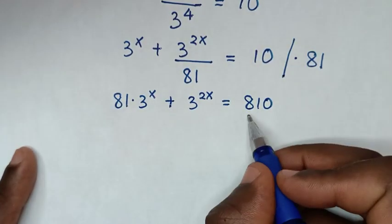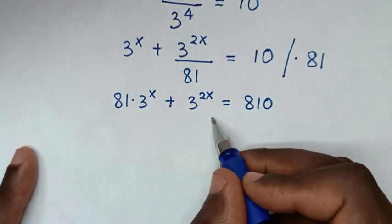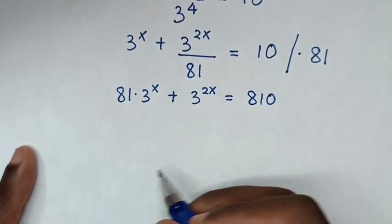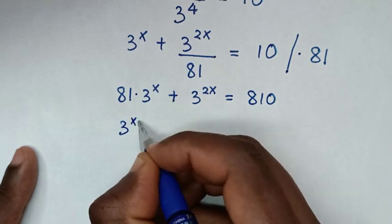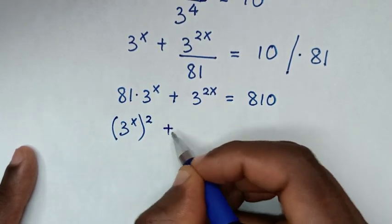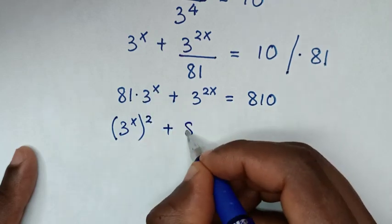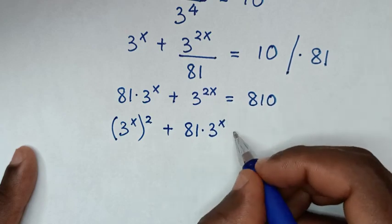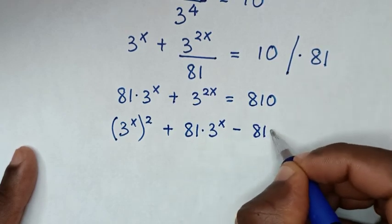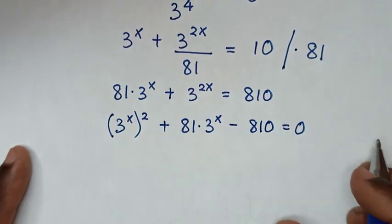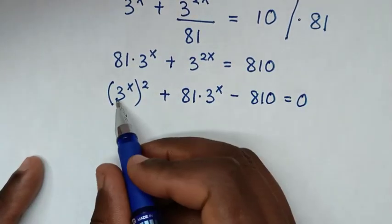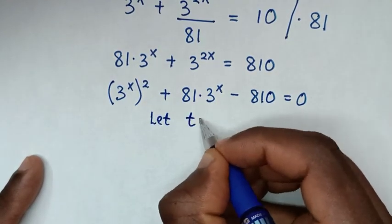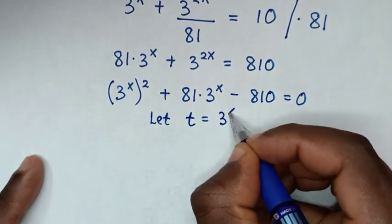Then we take 810 to the left side. So 3 power of 2x, which is 3 power of x bracket squared, plus 81 times 3 power of x, minus 810, is equal to 0. Since 3 power of 2x and 3 power of x are common, we let t equal to 3 power of x.